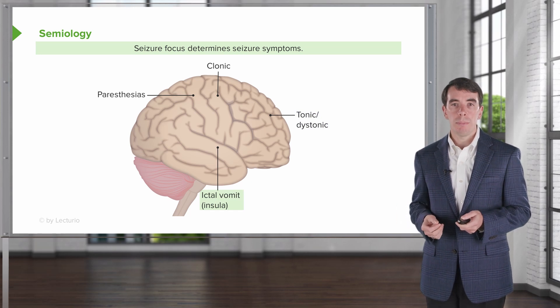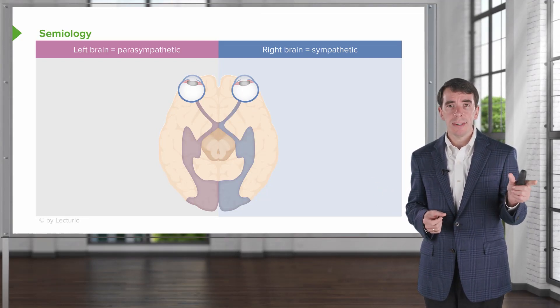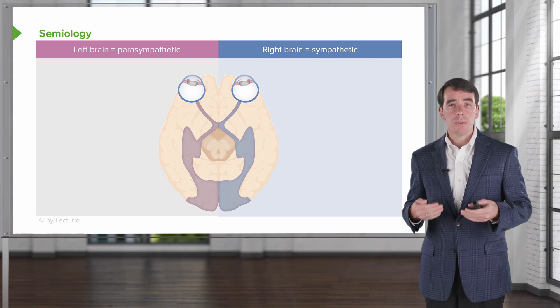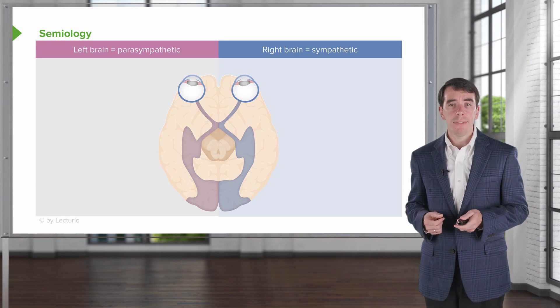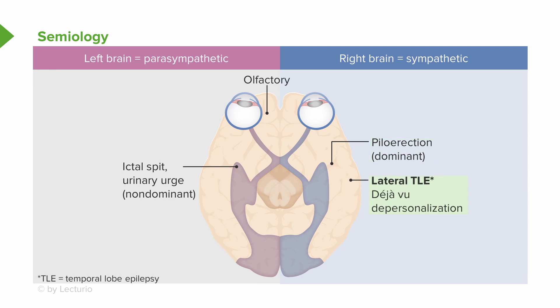Ictal vomiting during a seizure can come from the temporal lobe. We can also divide the sides of the brain into those associated with parasympathetic activity and those with sympathetic activity. Typically, the left brain is considered parasympathetic, and the right brain drives sympathetic activity. Ictal spitting, urinary urge incontinence, or urinary urgency is seen with left-sided medial temporal ictal onset. Olfactory auras can be seen with bifrontal seizures or seizures in the orbitofrontal cortices on either side of the brain. Piloerection is seen in dominant hemisphere medial temporal lobe seizures. Deja vu is a symptom seen from seizures that develop from the lateral temporal lobe — either the dominant or non-dominant temporal lobes.